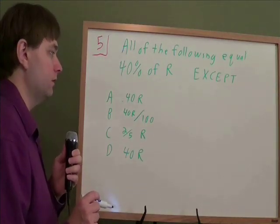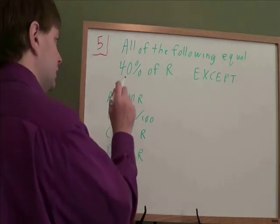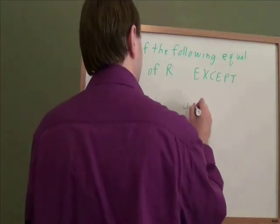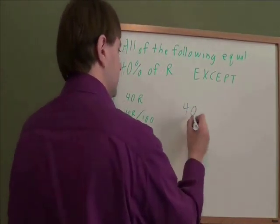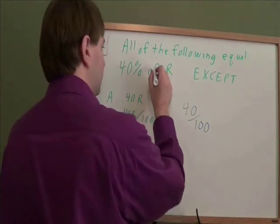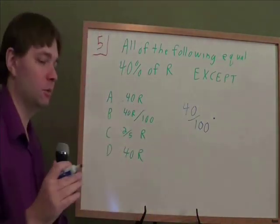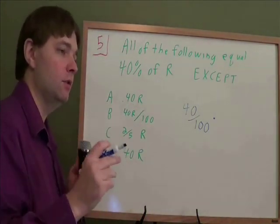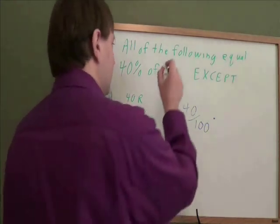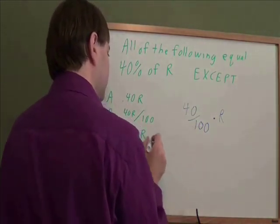All of the following equal 40% of R, except which of these? Well, first of all, let's just find a single way to write 40% of R. 40 is 40. Percent means divide by 100. It's Latin for out of 100. The word of means multiply. If that doesn't make sense, think about a real world example. If I give you two of these $20 bills, how much money did I give you? Two times 20. And R is the letter R.